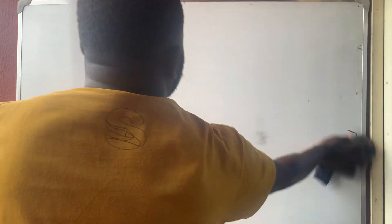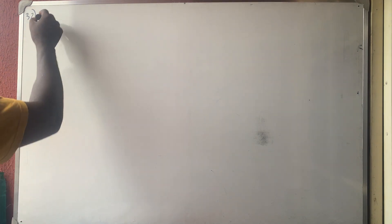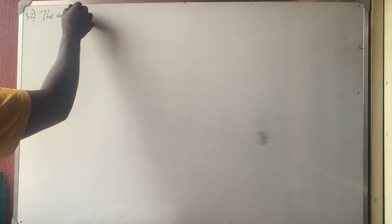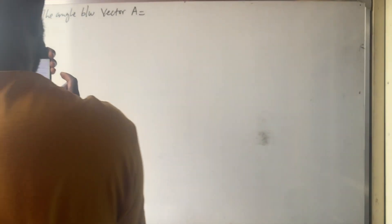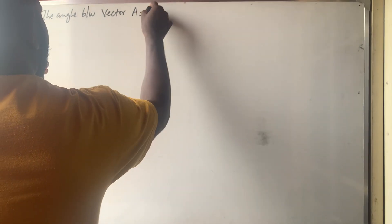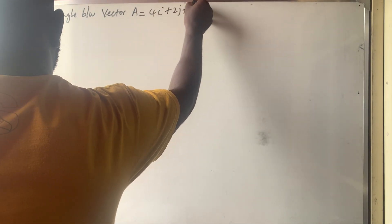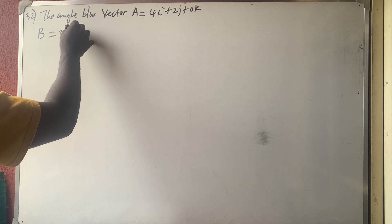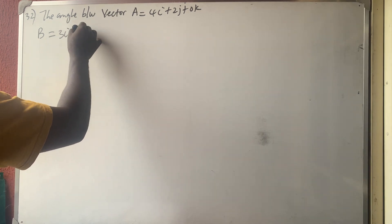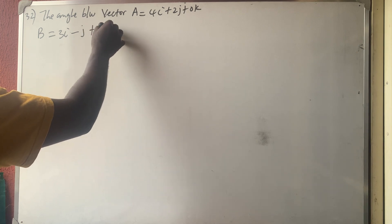Question 32: Find the angle between vector A = 4i + 2j + 0k and vector B = 3i − j + 5k.